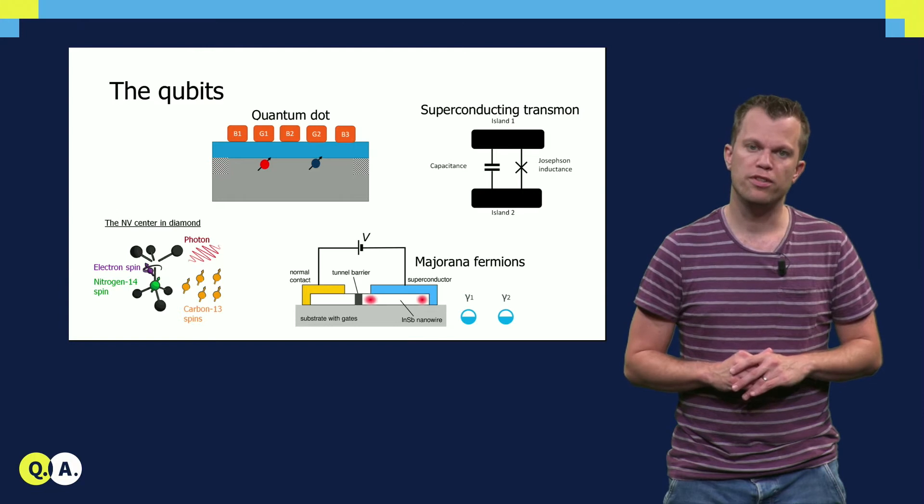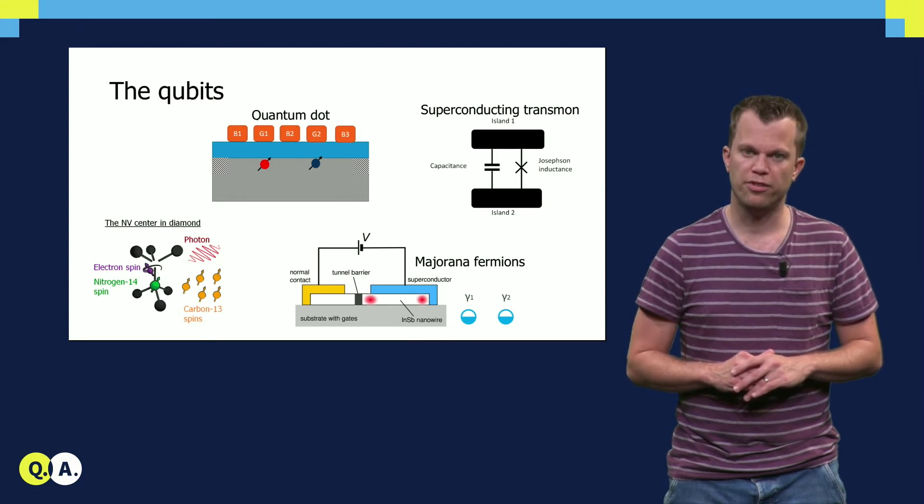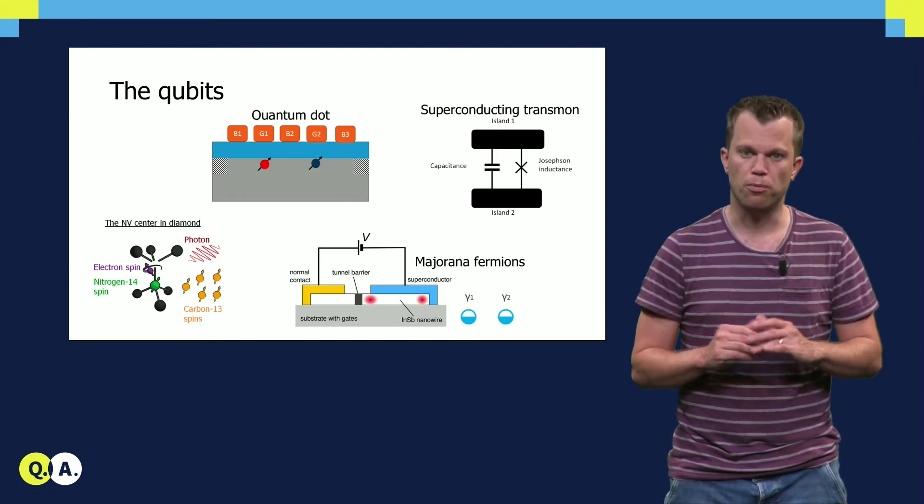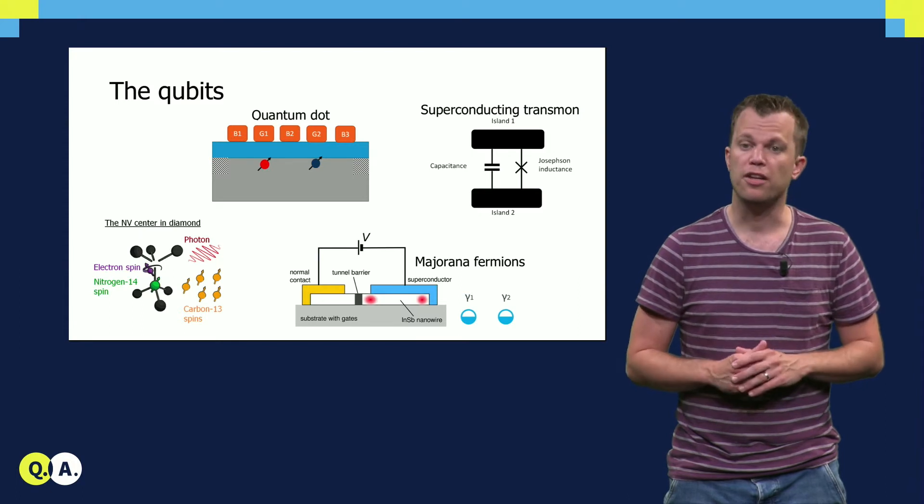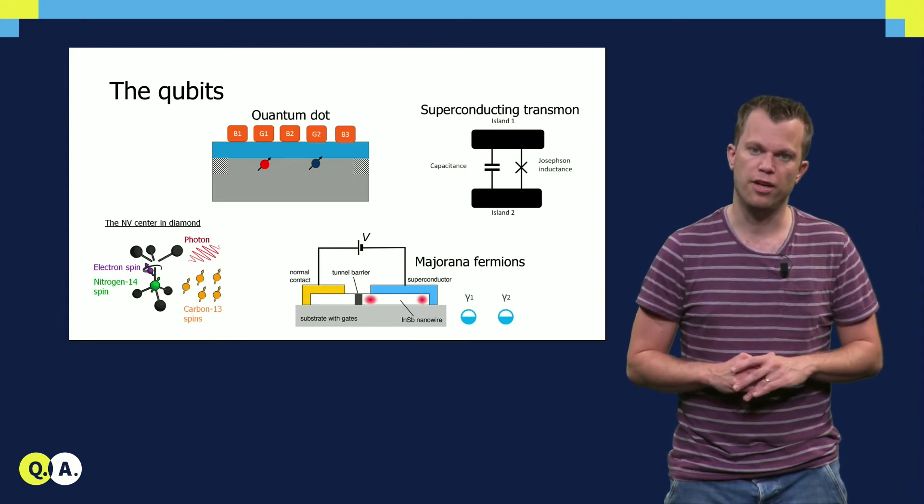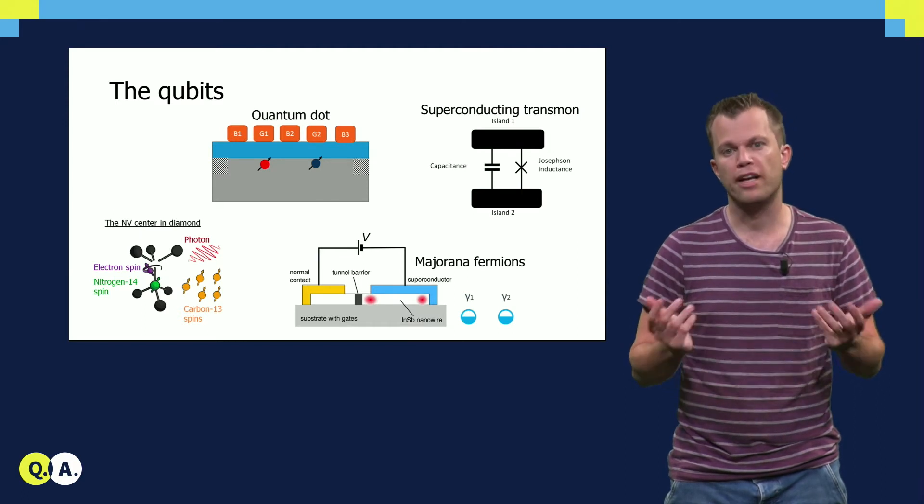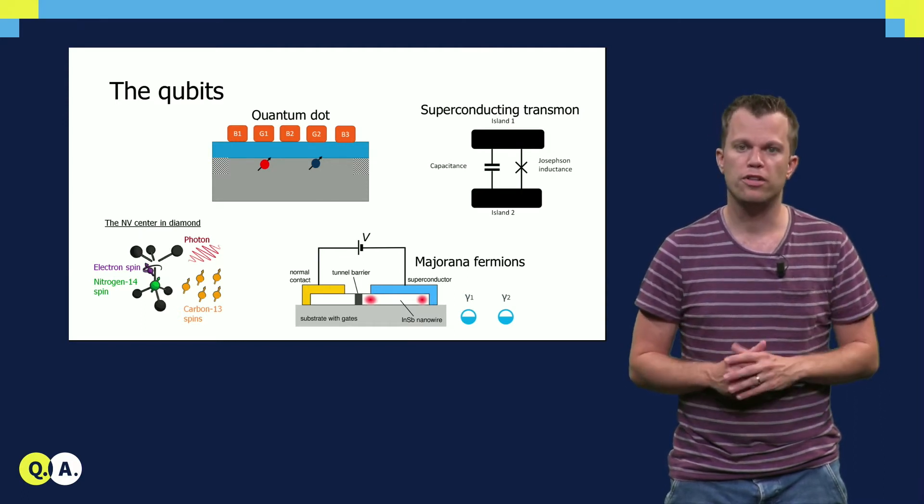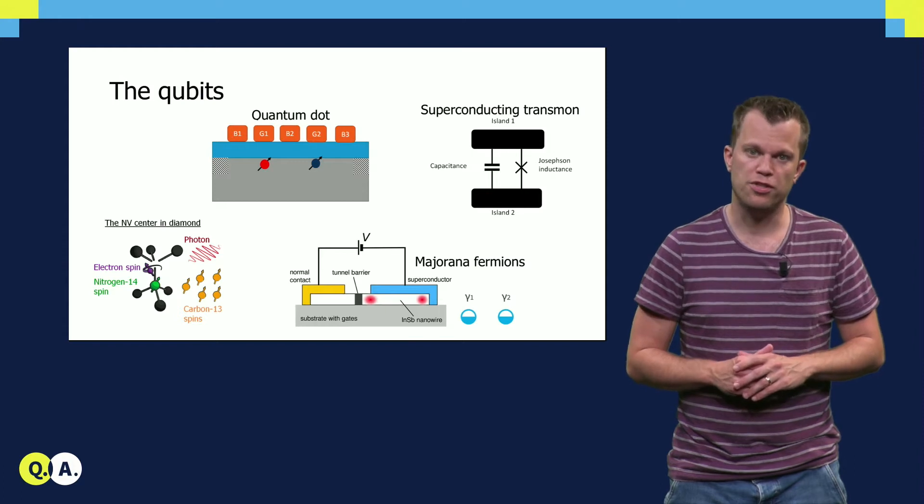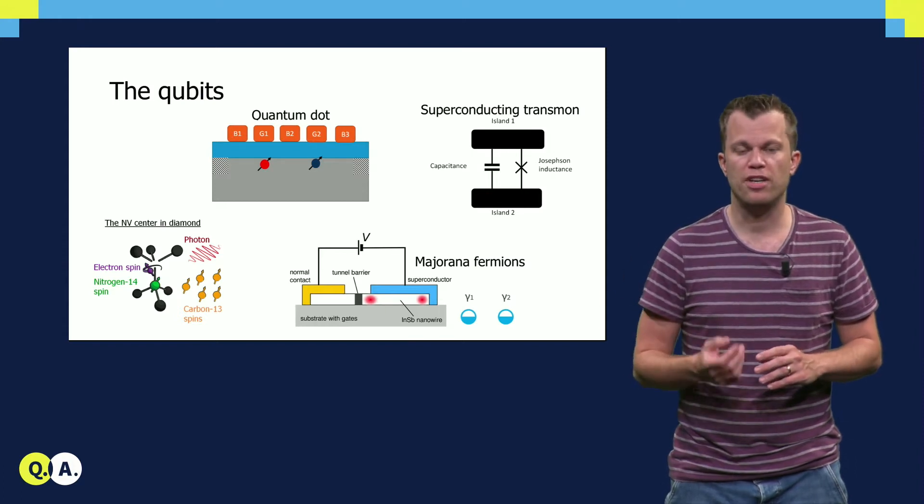Large efforts are devoted to improving the qubit environment, leading to qubits that become more and more isolated and thus to qubits with extended coherence. This is achieved by for example removing magnetic noise from nearby nuclear spins, or electric noise stemming from charge defects in the substrate.